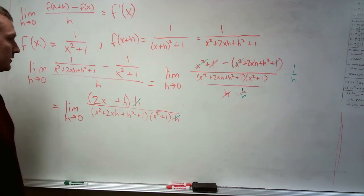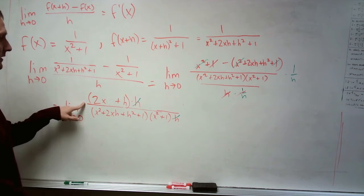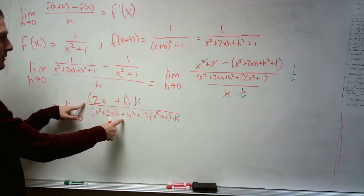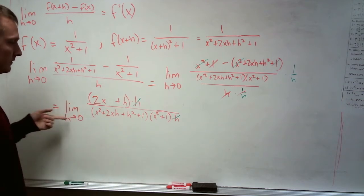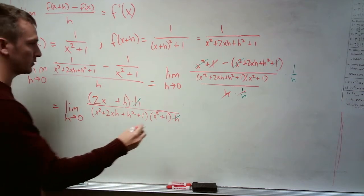So there's some of the limit laws that we have. The quotient law says if you can find this and you can find this limit, and if this limit is not 0, then just go ahead and take the quotient of limits.